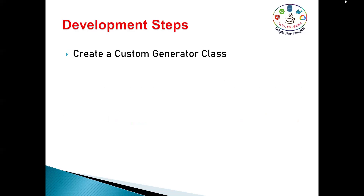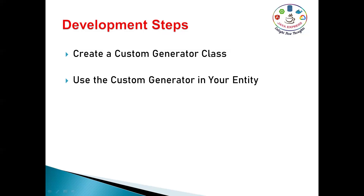To do this development in Spring Boot, the first step is to create a custom generator class. Hibernate provides an interface called IdentifierGenerator, and using that interface you can create your custom generator class. Once you've written your business logic, you map it to your entity class — whether it's a product entity, category entity, employee, or department. These two are the development steps, and to test our API we write the controller layer, service layer, and repository layer.